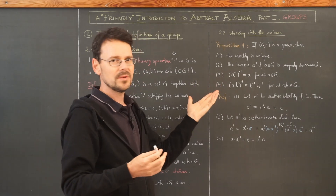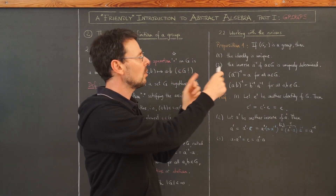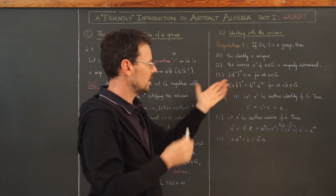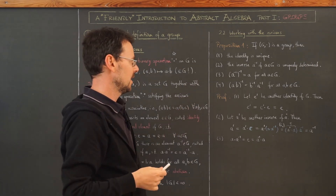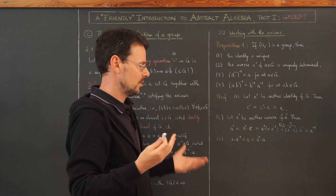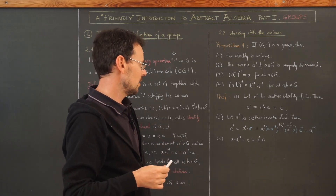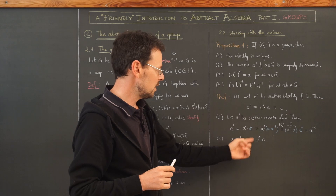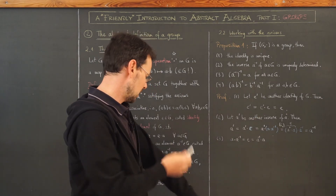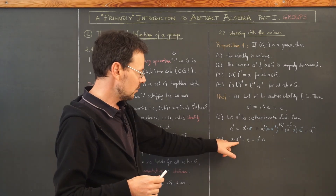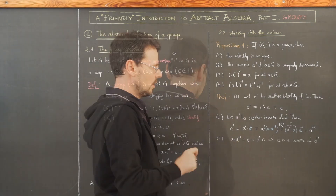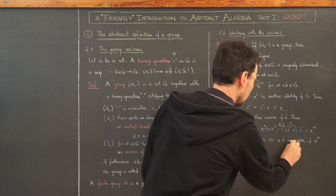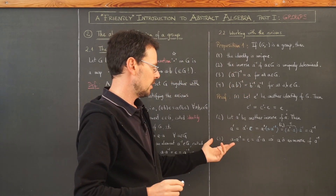For proof 3, this seems obvious — you might argue that by power laws, (−1)×(−1) = 1. But we haven't proven any power laws yet, and a⁻¹ is not defined as 1/a here — we're not necessarily in the real numbers. So we write down the definition: a·a⁻¹ = e = a⁻¹·a.